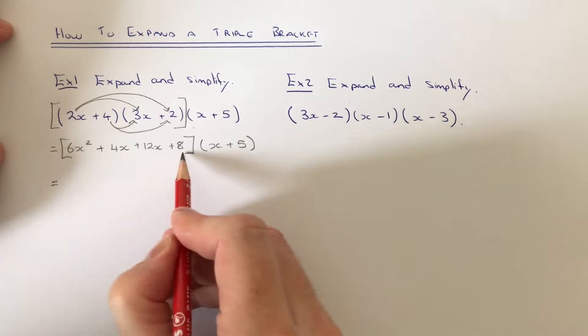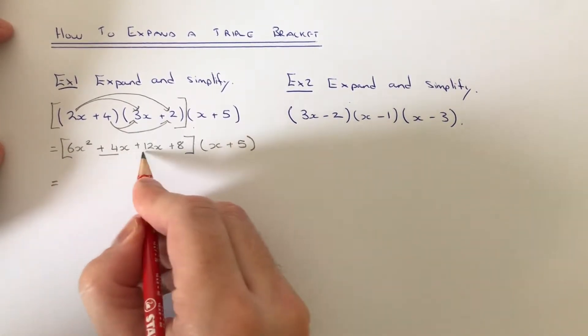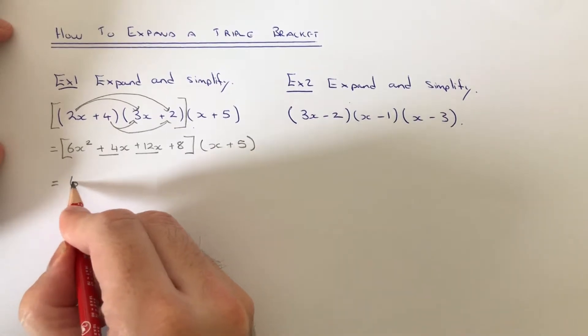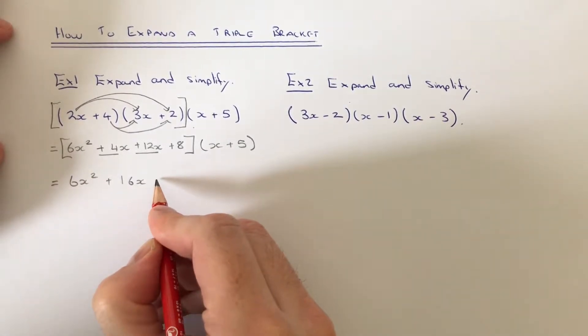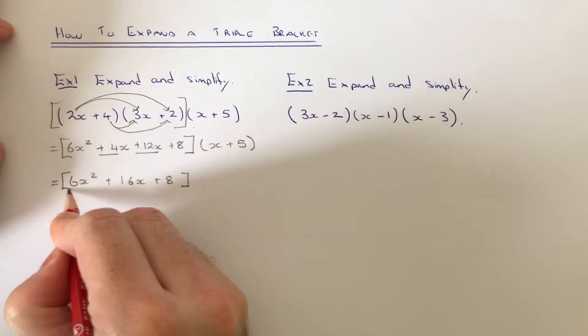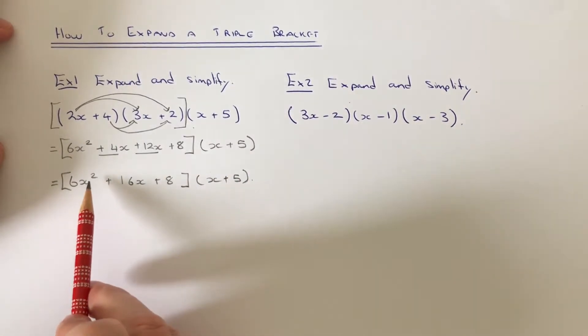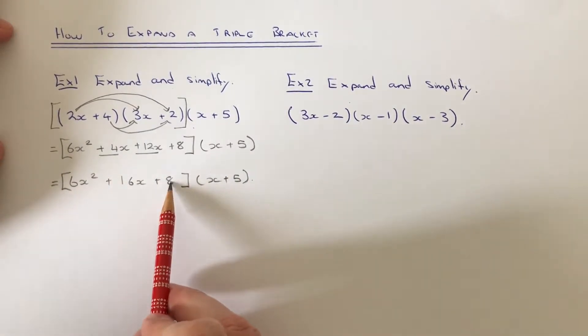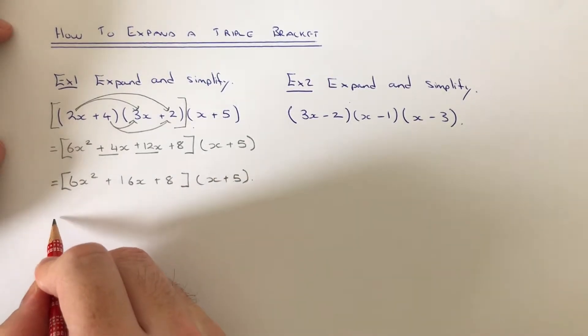If we just simplify this expression here by adding 4x and 12x together, we now need to multiply the three terms in the first bracket by the two terms in the second bracket.